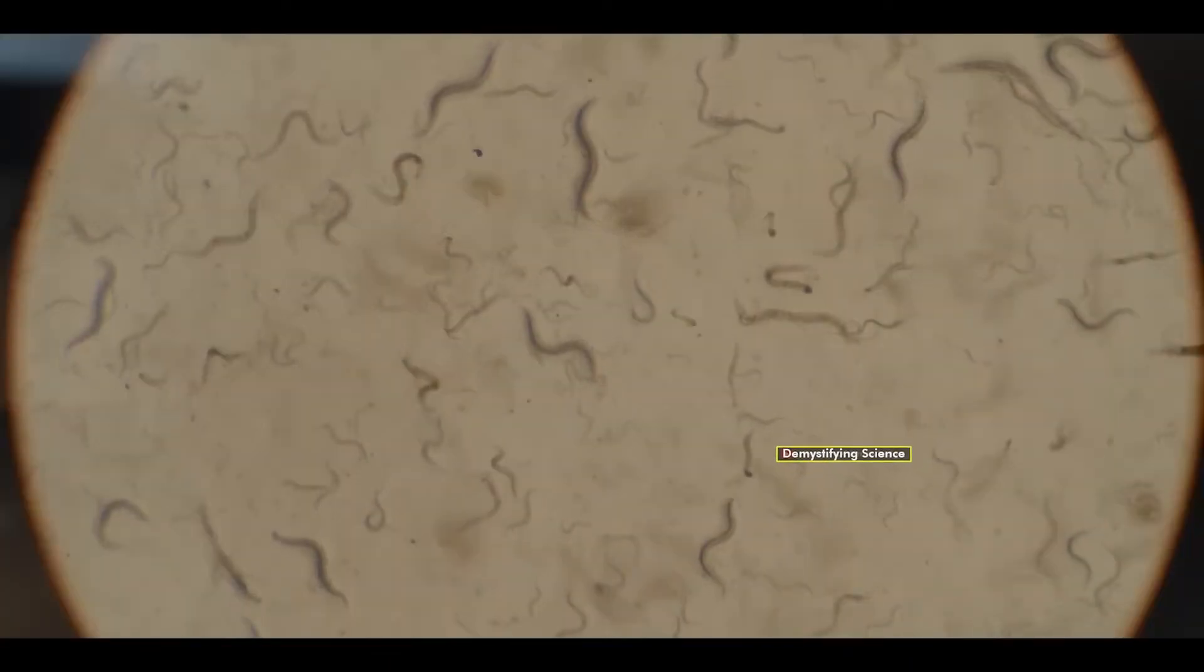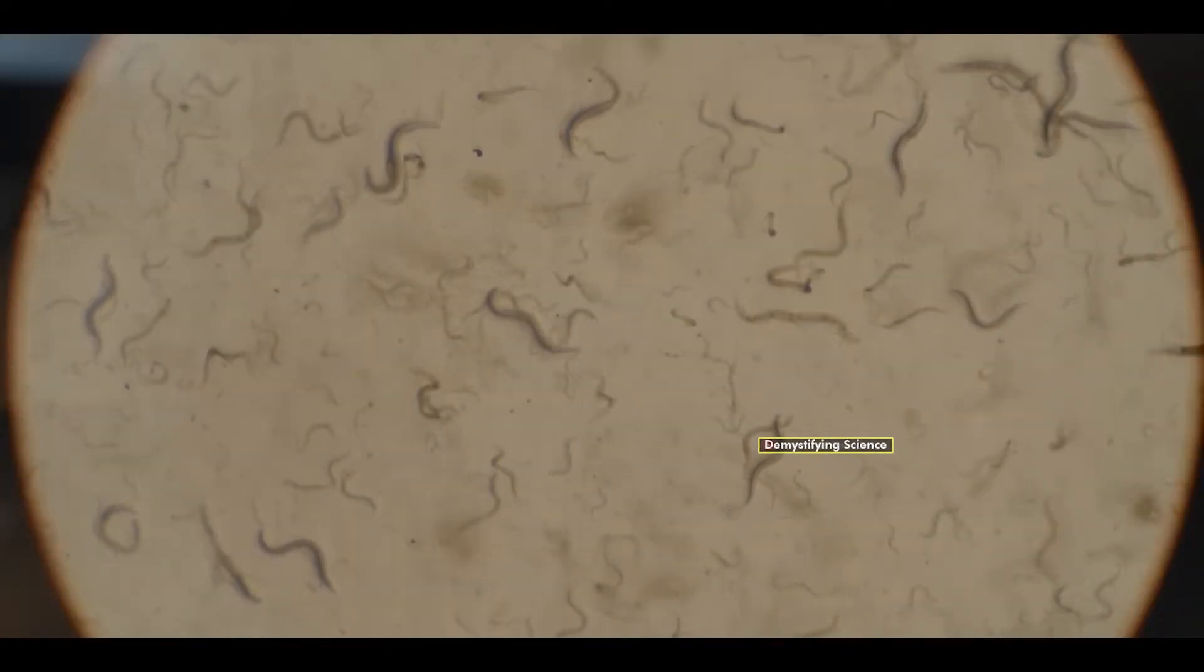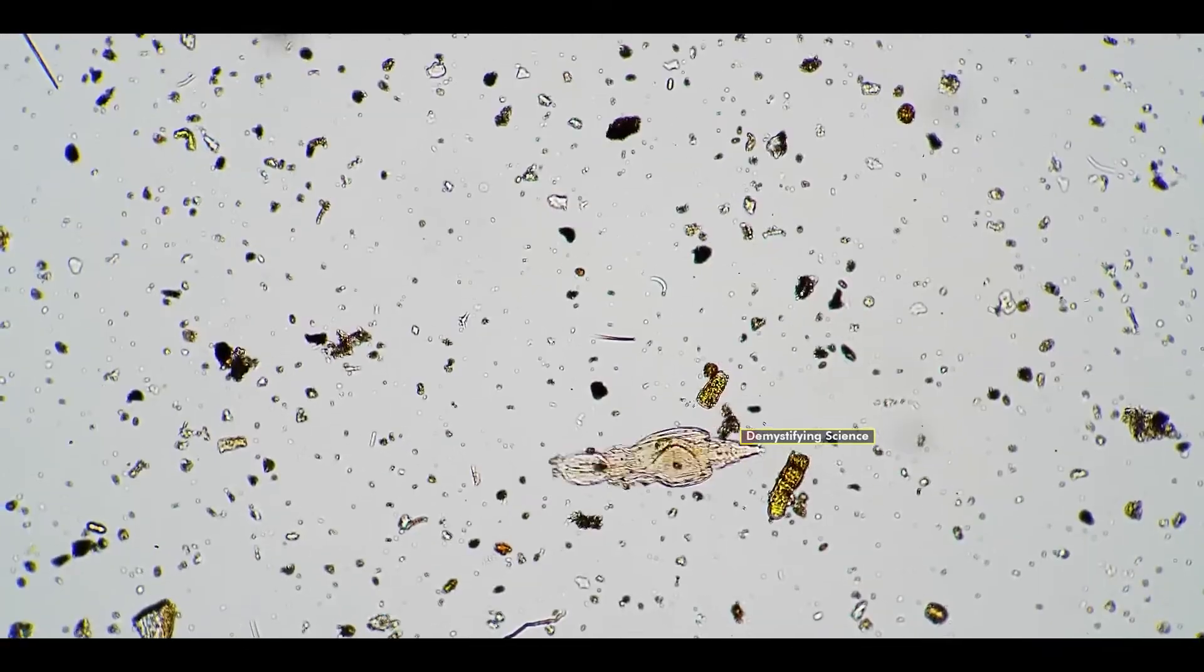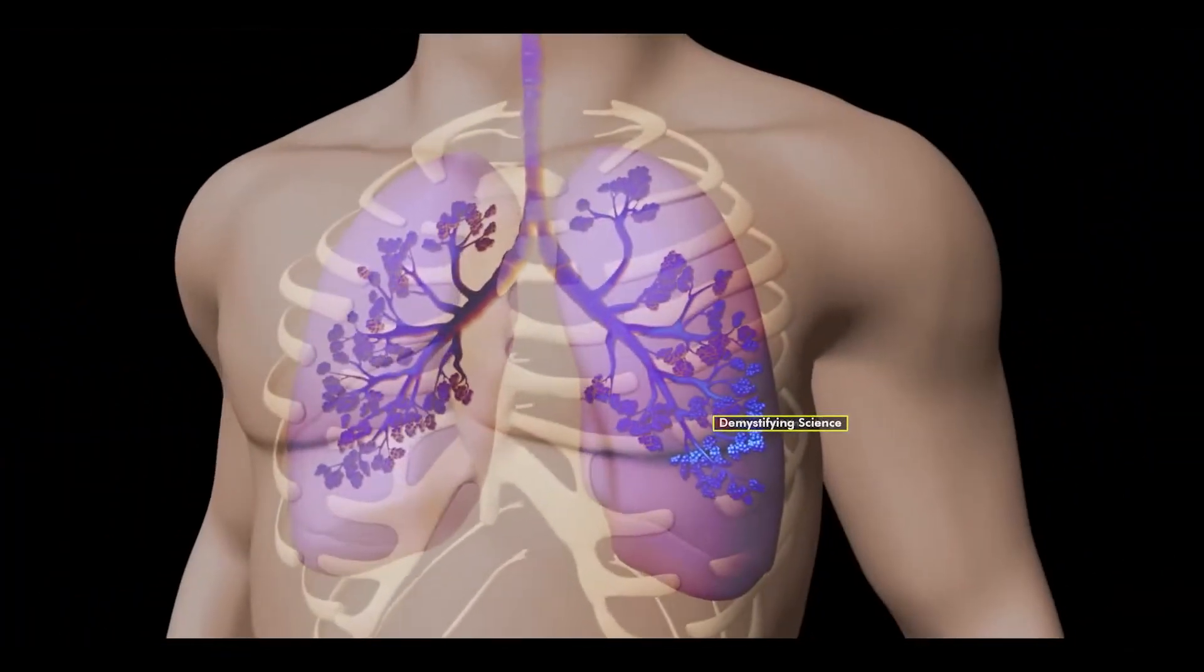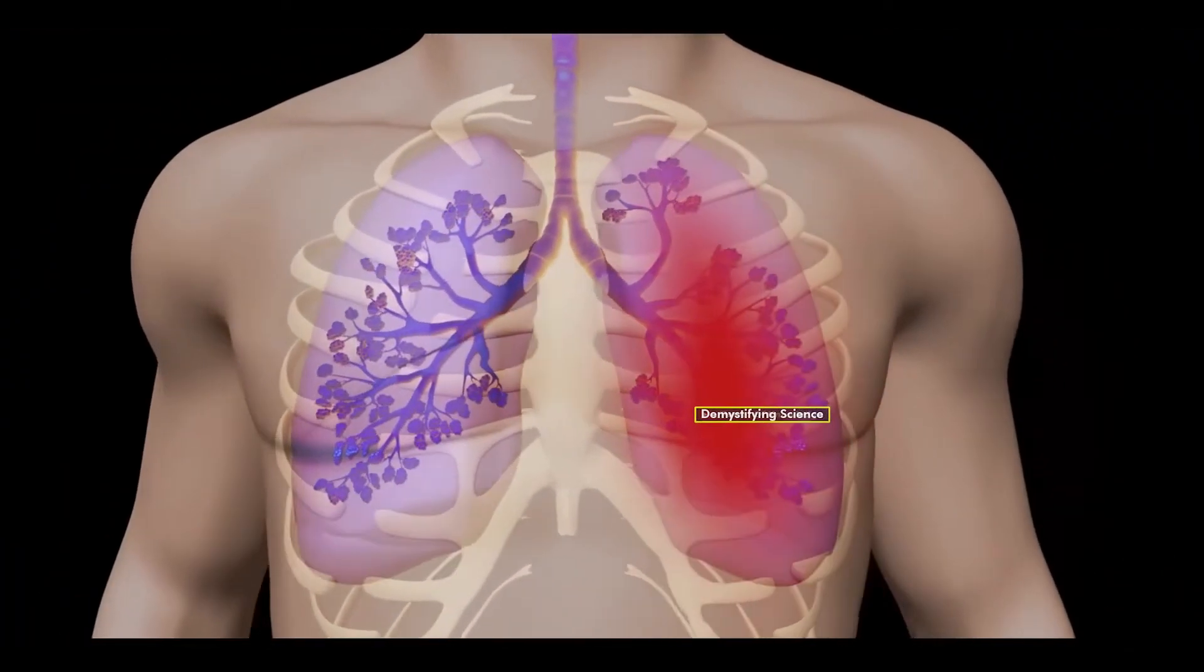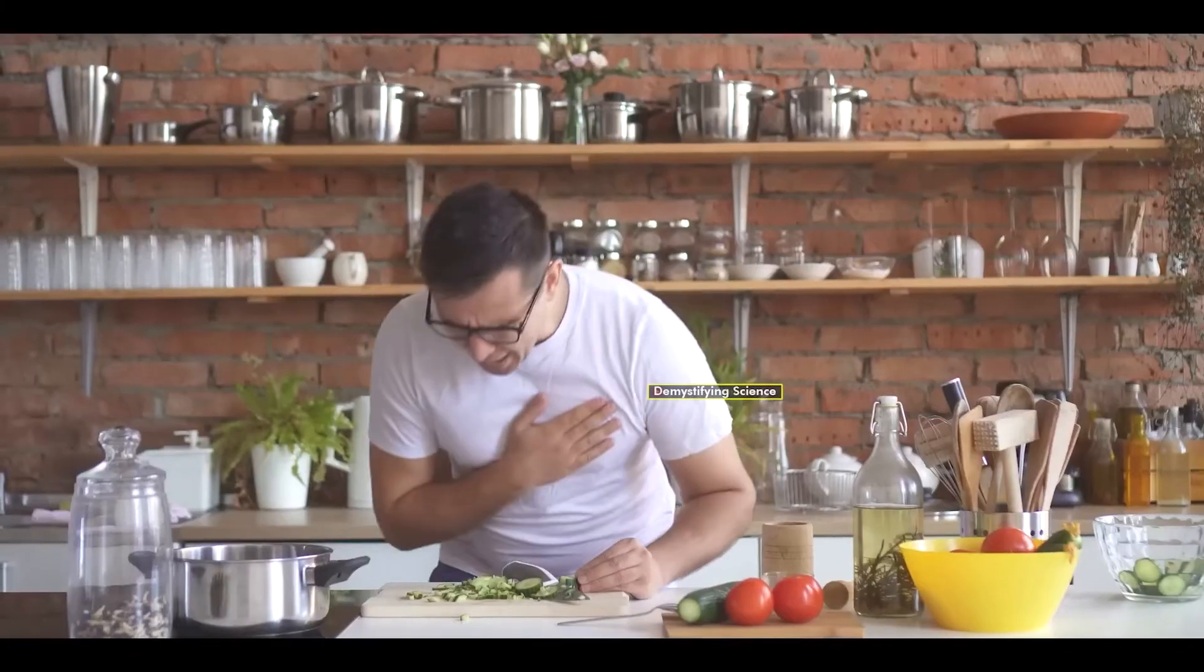In some cases, if roundworms produce microfilaria in the initial stages of their life cycle, these microfilaria can accumulate in the lungs, causing inflammation. This inflammation results in symptoms such as coughing, wheezing, and breathing difficulties.